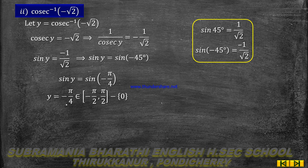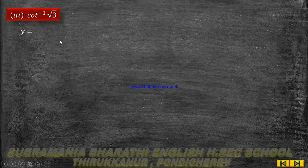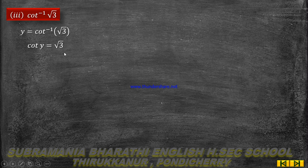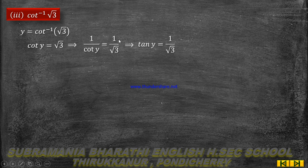Therefore y equal to minus π by 4. The third substitution: cot inverse of root 3. Let y equal to cot inverse of root 3, so cot y equal to root 3. Taking reciprocal on both sides, 1 by cot y equal to 1 by root 3, and since 1 by cot y equals tan y, we get tan y equal to 1 by root 3.